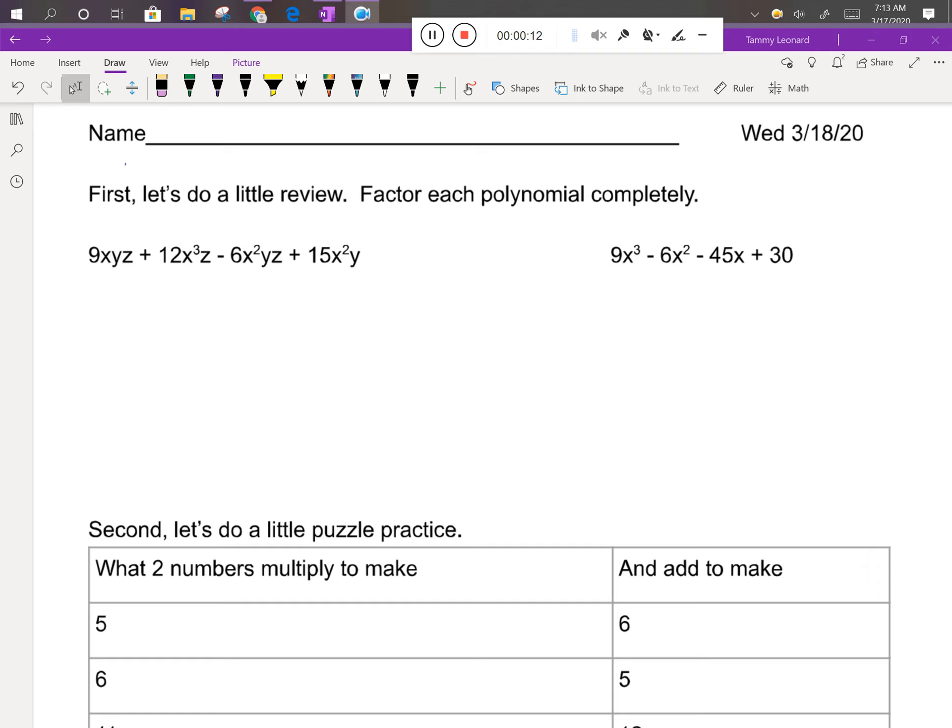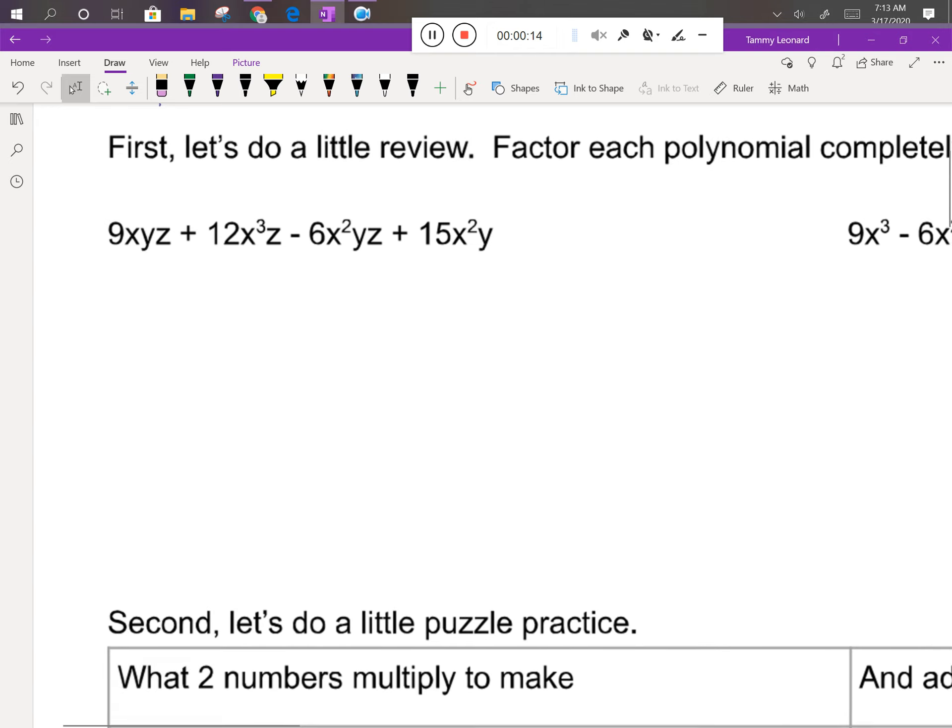In the very first problem that you see on the upper left, the first thing I notice when I look at this problem is that there's a lot of variables and a lot of numbers, and so it's my hope that maybe there's a GCF, a greatest common factor, that we can take out of all these terms. I see 9, 12, 6, and 15 are all divisible by 3.